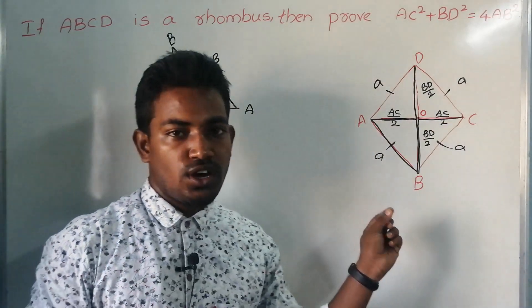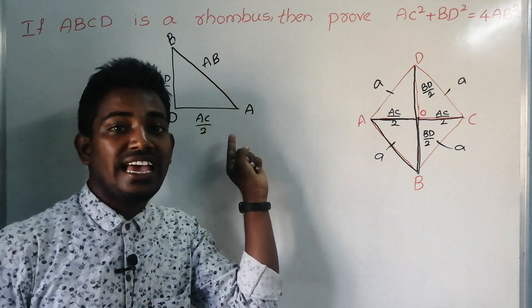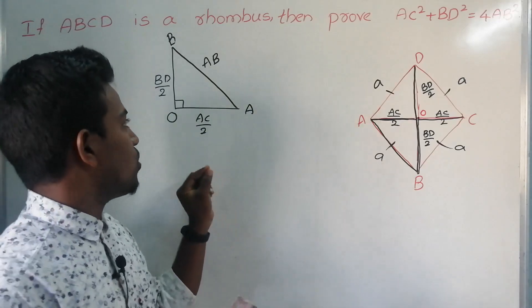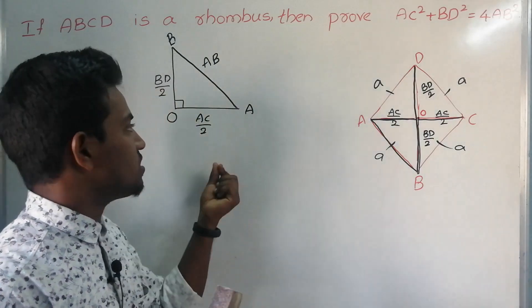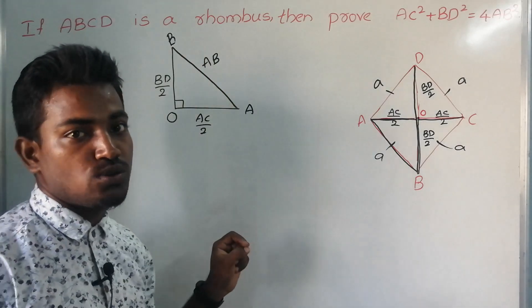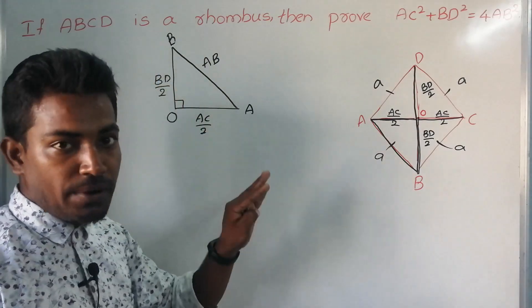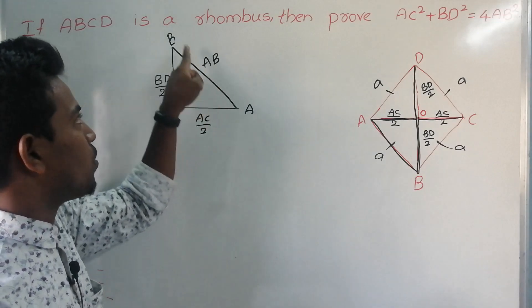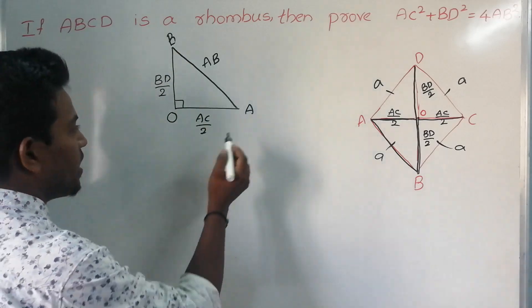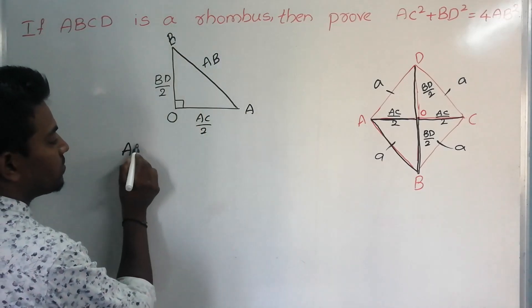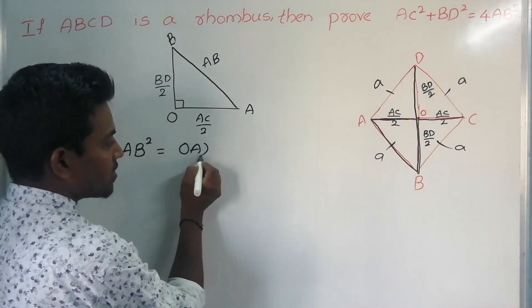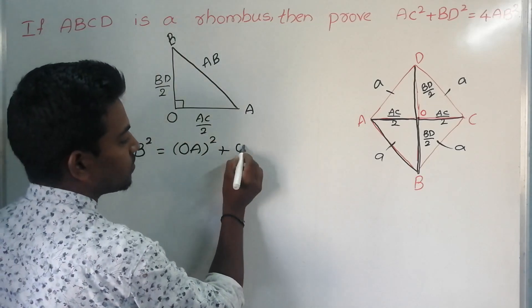Now observe — this is a right angle triangle. At the center point O, the angle is 90 degrees. We already know the famous Pythagoras theorem, which says hypotenuse² = base² + height². So, applying that here: AB² = AO² + OB².